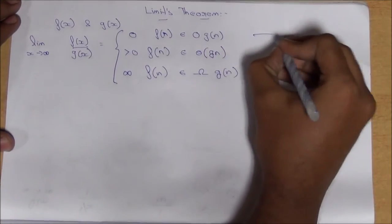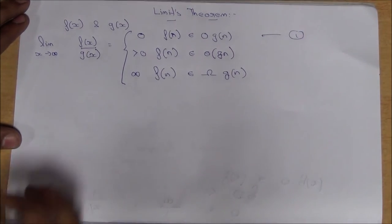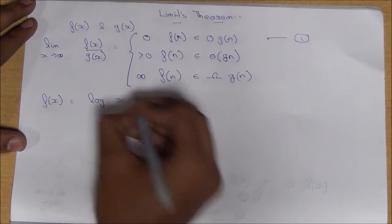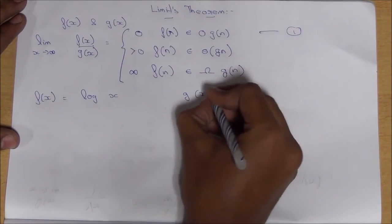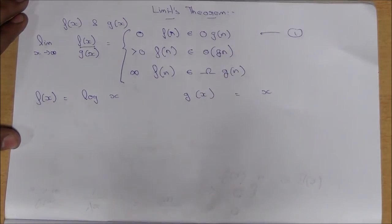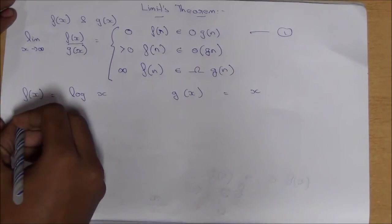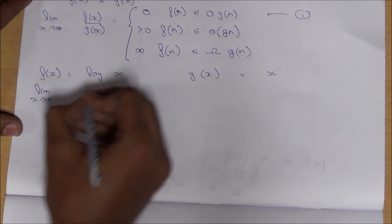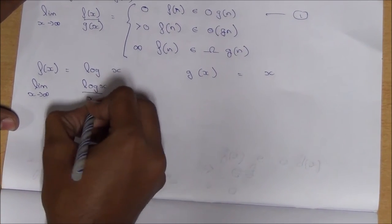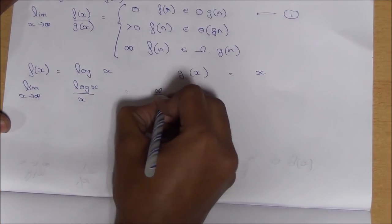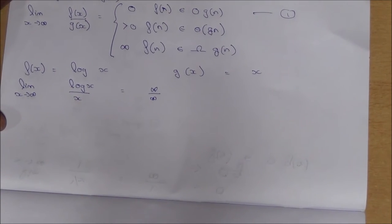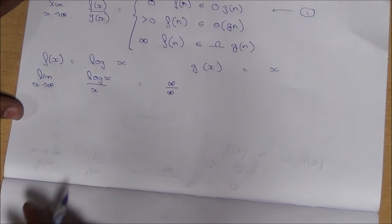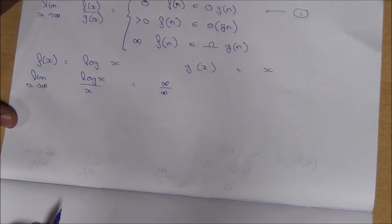Now let's see an example for the first case. Let's consider f is equal to log x and g equals x. When we apply the limit x tends to infinity to log x by x, we get an answer infinity by infinity, which is of a form that cannot be defined. To simplify this further, we use L'Hôpital's Theorem.